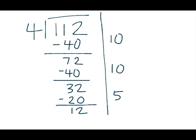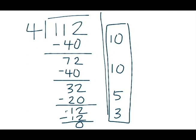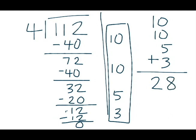I know there aren't another 5 fours in 12 because that would give me too much — I only have 12 left. But 4 times 3 gives me exactly that. So I write my 3 as the last partial quotient, multiply 3 times 4 to get 12, and subtract: 12 minus 12 is 0, so I'm finished. I add all partial quotients: 10 plus 10 plus 5 plus 3 equals 28 — the same quotient as before. 112 divided by 4 equals 28.